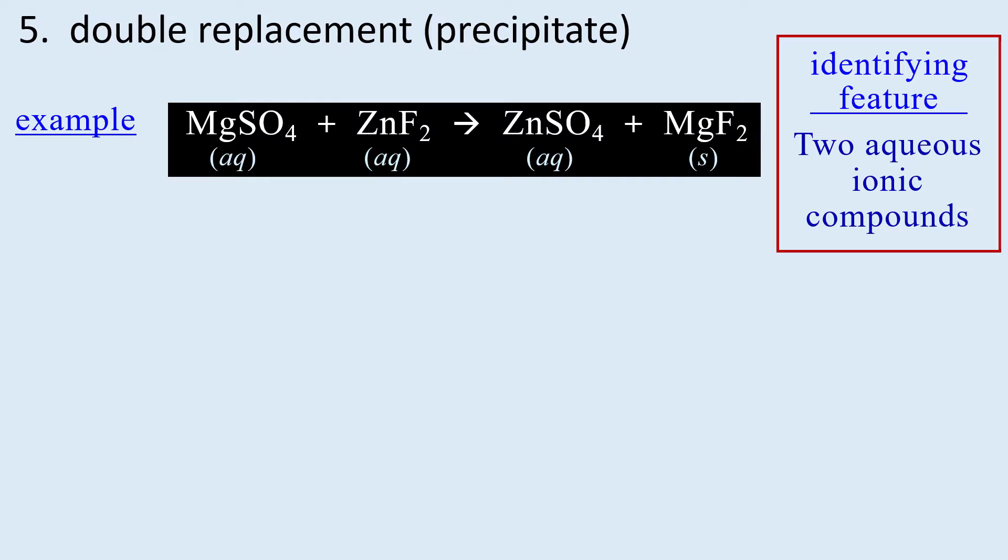So we identify double replacement as having two aqueous ionic compound reactants. This is your basic double replacement. Please see the product prediction link to get a much more in-depth view of what is happening so that you can successfully predict products in a double replacement.